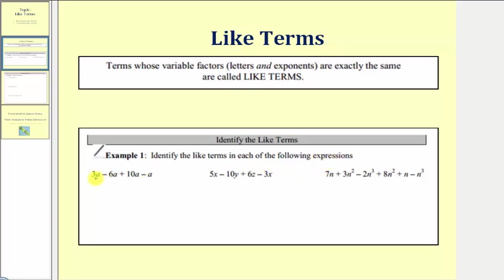Our first expression is 3a minus 6a plus 10a minus a. Notice all four of these terms have exactly one factor of a, and therefore all four terms are like terms. We have 3a, the second term would be negative 6a, the third term is 10a, and the fourth term is negative a.